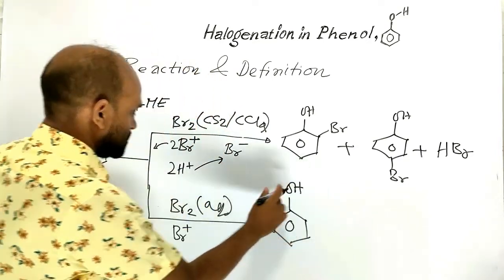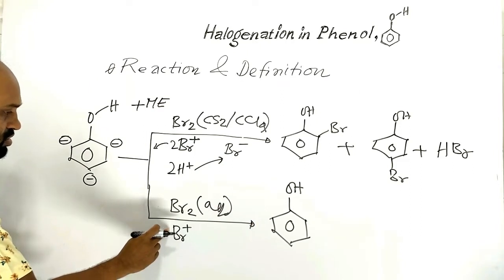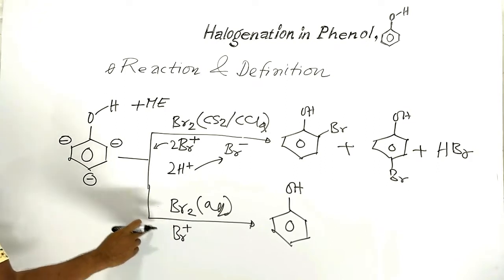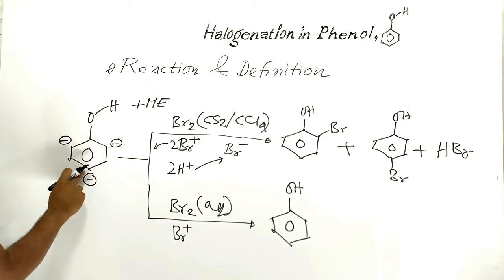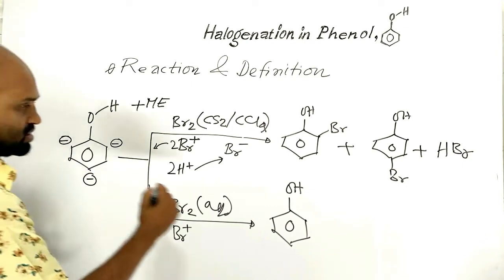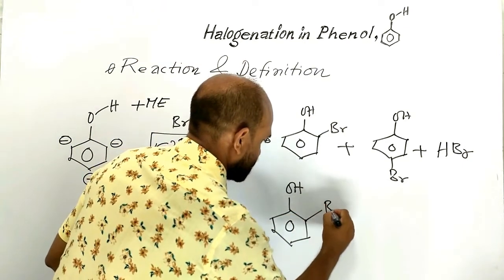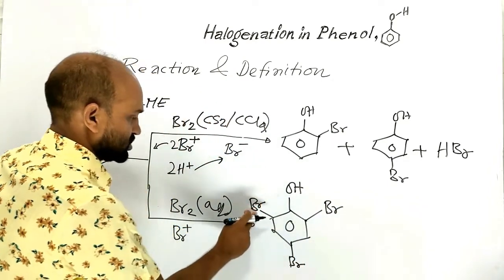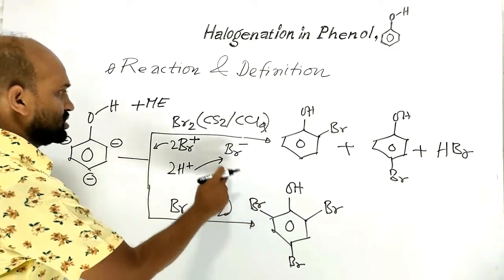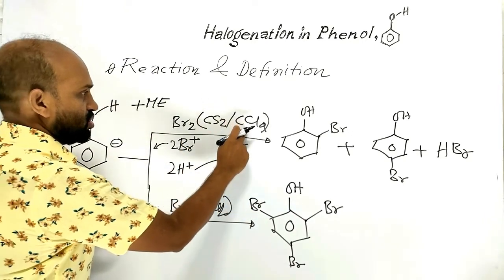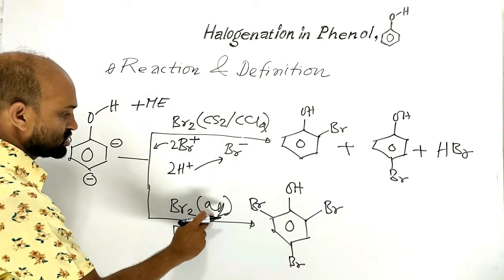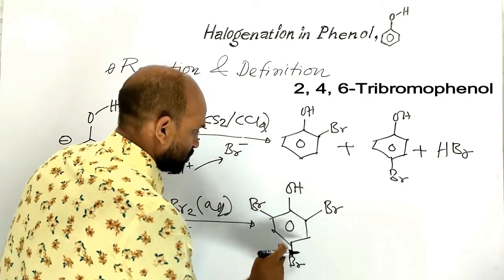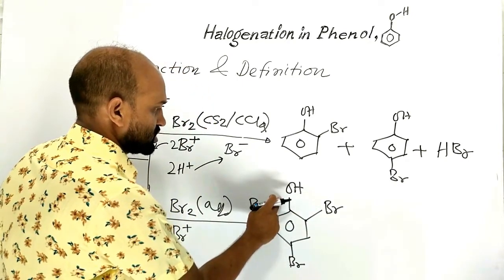With phenol, the bromine cation produced from the bromine molecule will attack ortho and para positions at the same time — that is, bromine cation attacks all available ortho and para positions simultaneously. So, when water is used as solvent instead of carbon disulfide or carbon tetrachloride, 2,4,6-tribromophenol is produced.